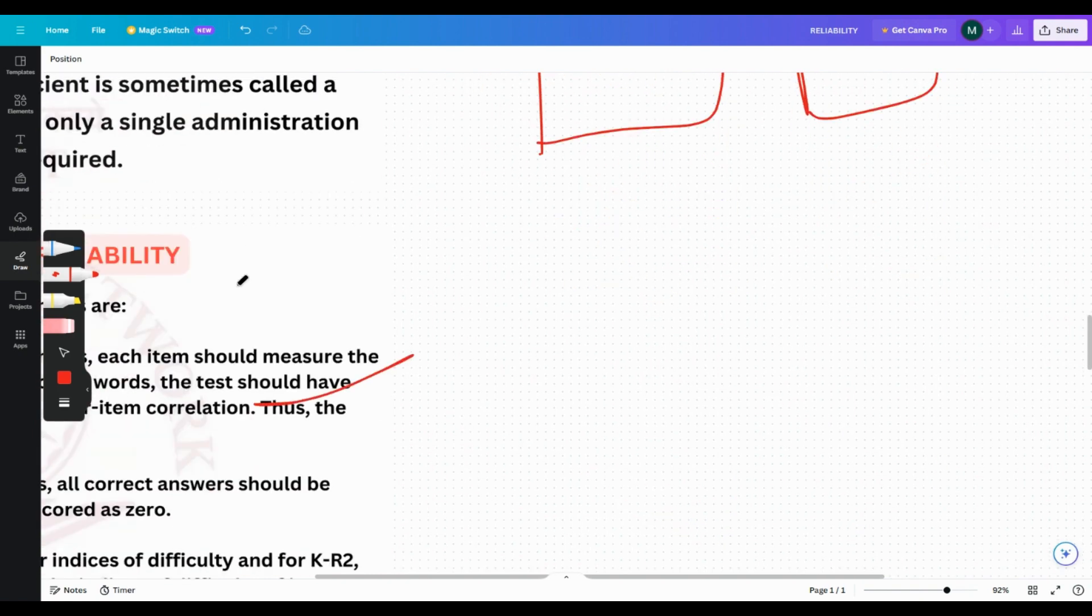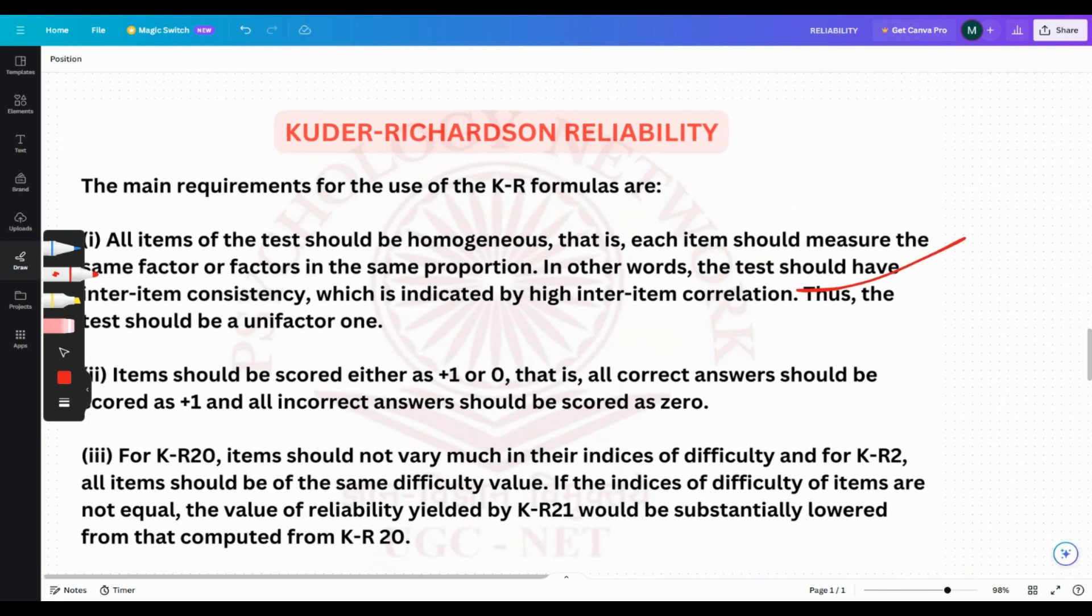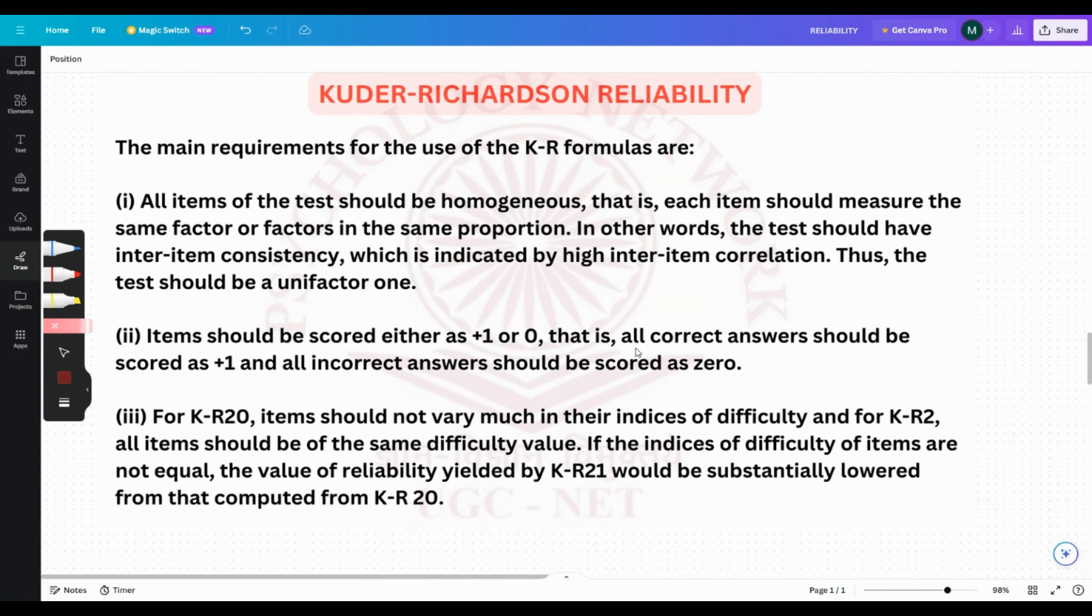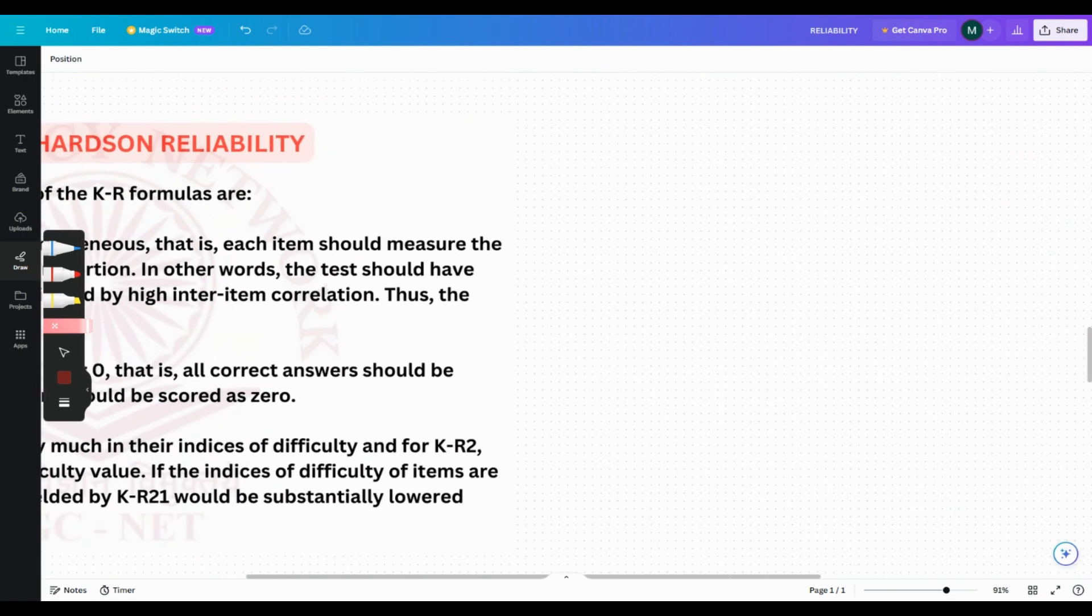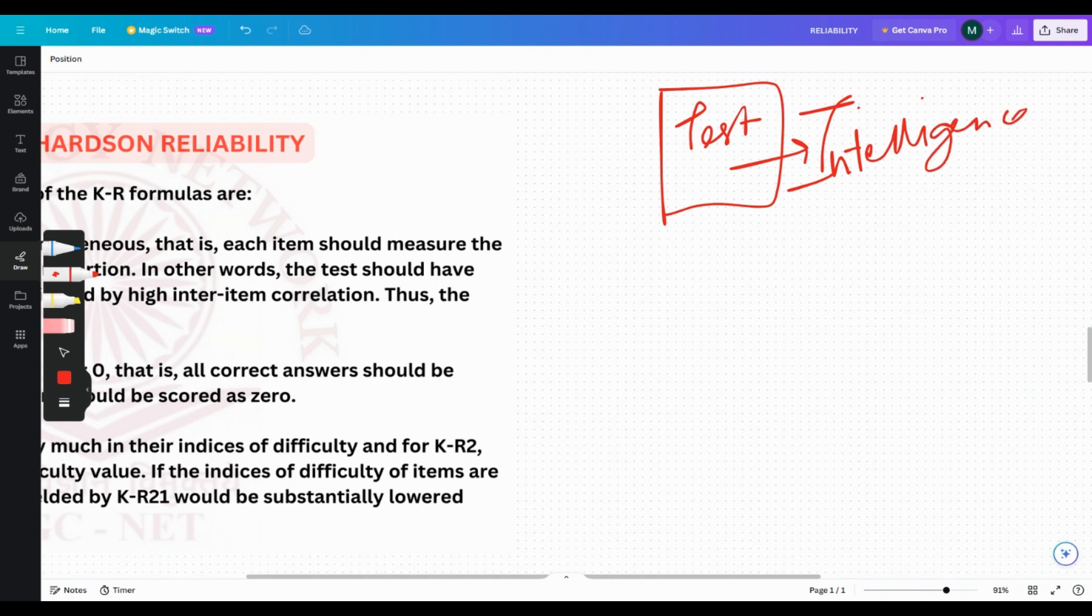Moving on to Kuder-Richardson reliability. Before getting into these three, listen to what I'm saying. Kuder-Richardson did a series of research. They had some difficulties with the split-half method in estimating reliability. What they were saying is there is one test. Again, I'm going to be taking intelligence test. And they're splitting it. So they split it.